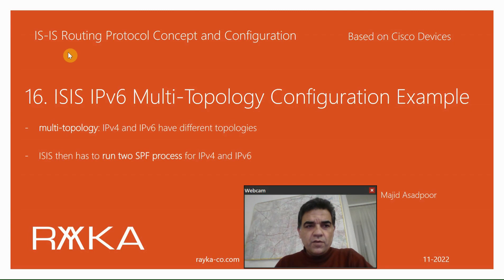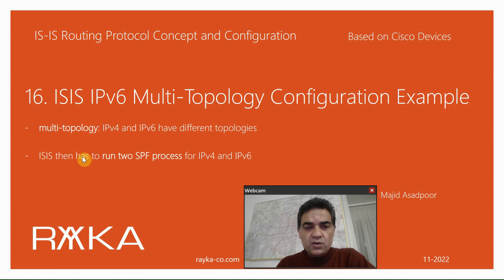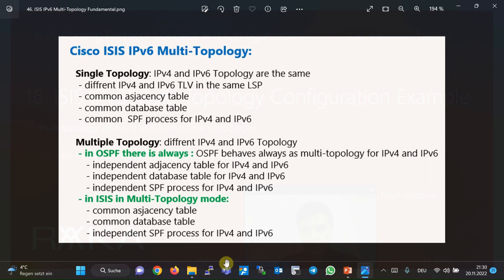Welcome to another video on ISIS routing protocol concept and configuration. In this section we will have a configuration example to configure ISIS over IPv6 in a network with multi-topology. Multi-topology means IPv4 and IPv6 have different topologies, and ISIS has to run two independent SPF processes for IPv4 and IPv6.